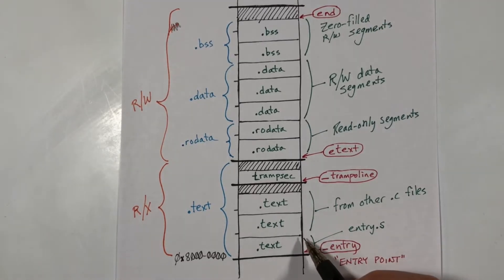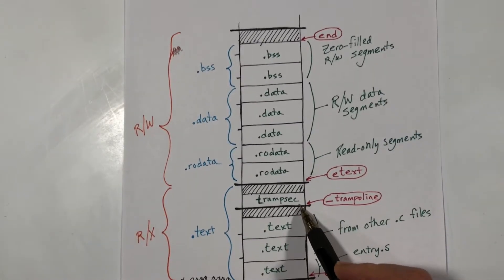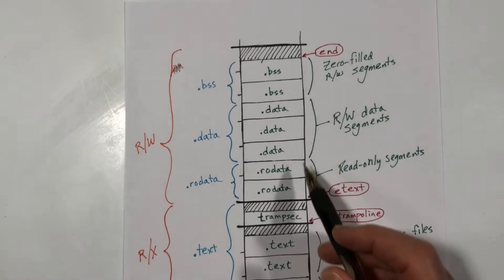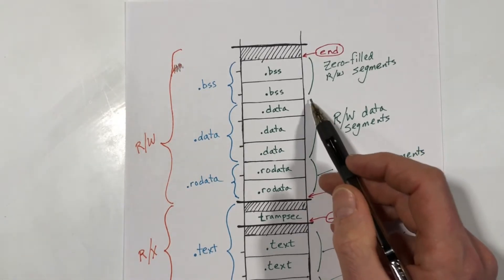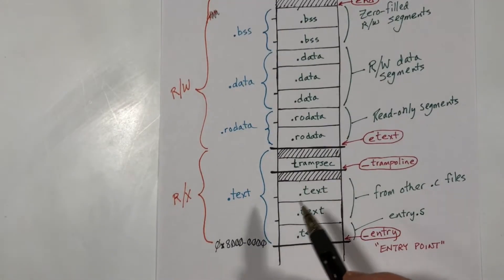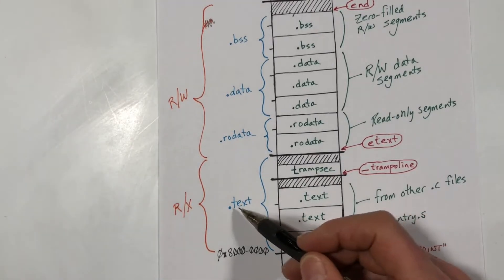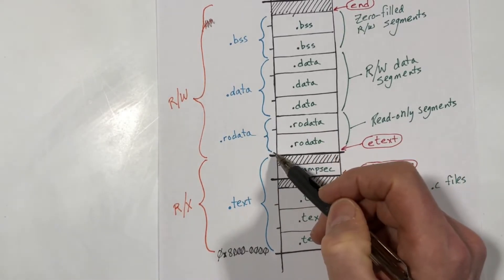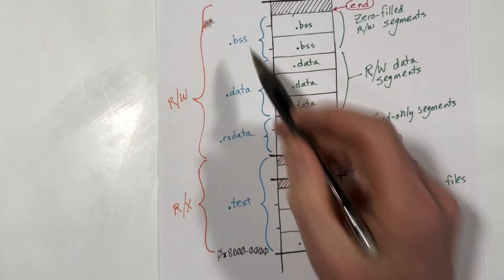Then it will include the text segments from all the other C files — there are a bunch of them, more than shown here. We have this special trampoline segment, and it'll place that. Then it will group all the read-only segments together from the different object files, all the data segments, and all the BSS segments. It will produce an executable file that combines all the text segments into one dot text segment, all the read-only data segments into one segment, all the data segments into one data segment, and all the BSS segments into one BSS segment.